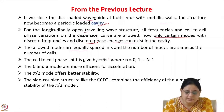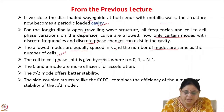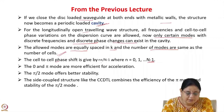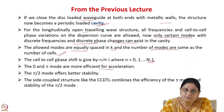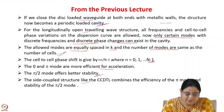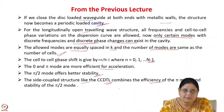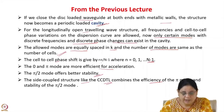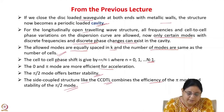The allowed modes are equally spaced in K and the number of modes equals the number of cells. The cell-to-cell phase shift is given by nπ/(N-1) where n goes from 0 to N-1 and N is the number of cells. The 0 and π modes are more efficient for acceleration because they have a field in all the cells. The π/2 mode offers better stability but is not very efficient because alternate cells are unexcited. Side-coupled structures like CCDTL combine the efficiency of the π mode and the stability of the π/2 mode — electromagnetically the structure is a π/2 structure whereas the beam sees a π mode structure.